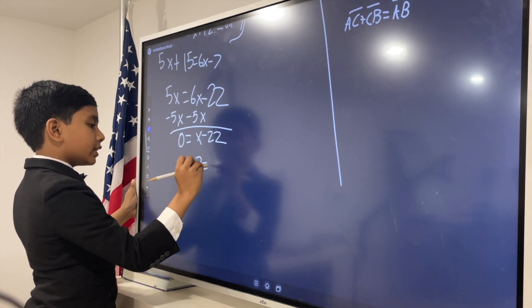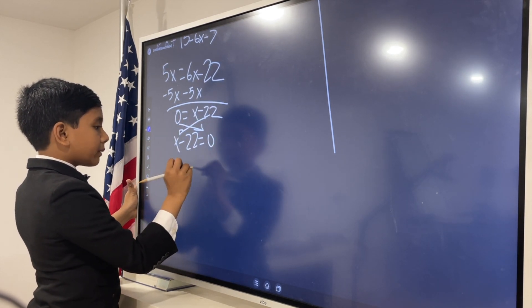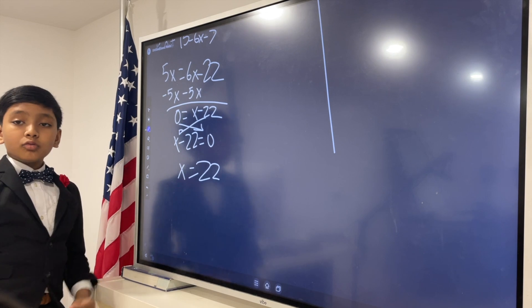So, x minus 22 equals 0. We add 22 to both sides. So, now, x is 22. Woohoo!